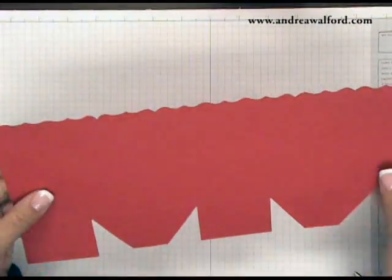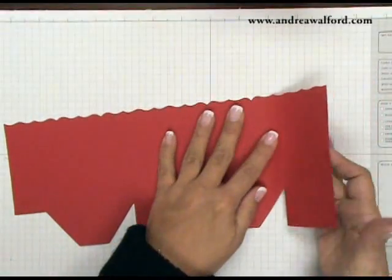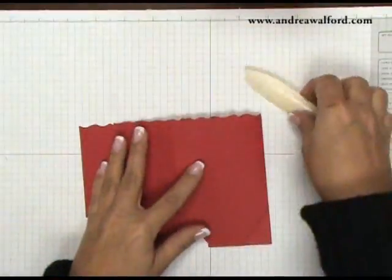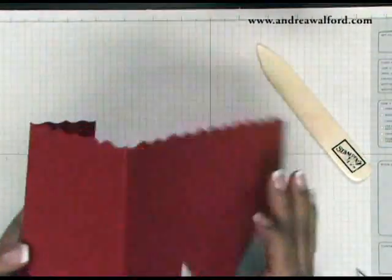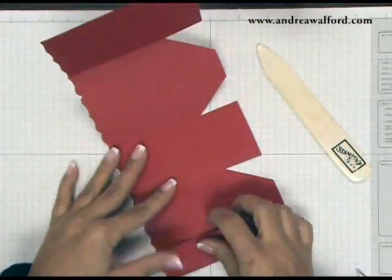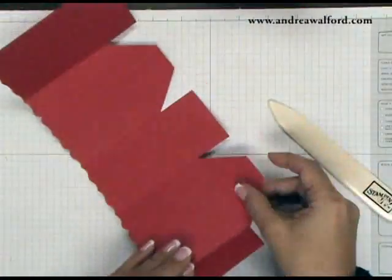So what you want to do is create mountain folds on all the straight lines of the box. And you're going to use your bone folder for this. You're going to fold up the bottom.